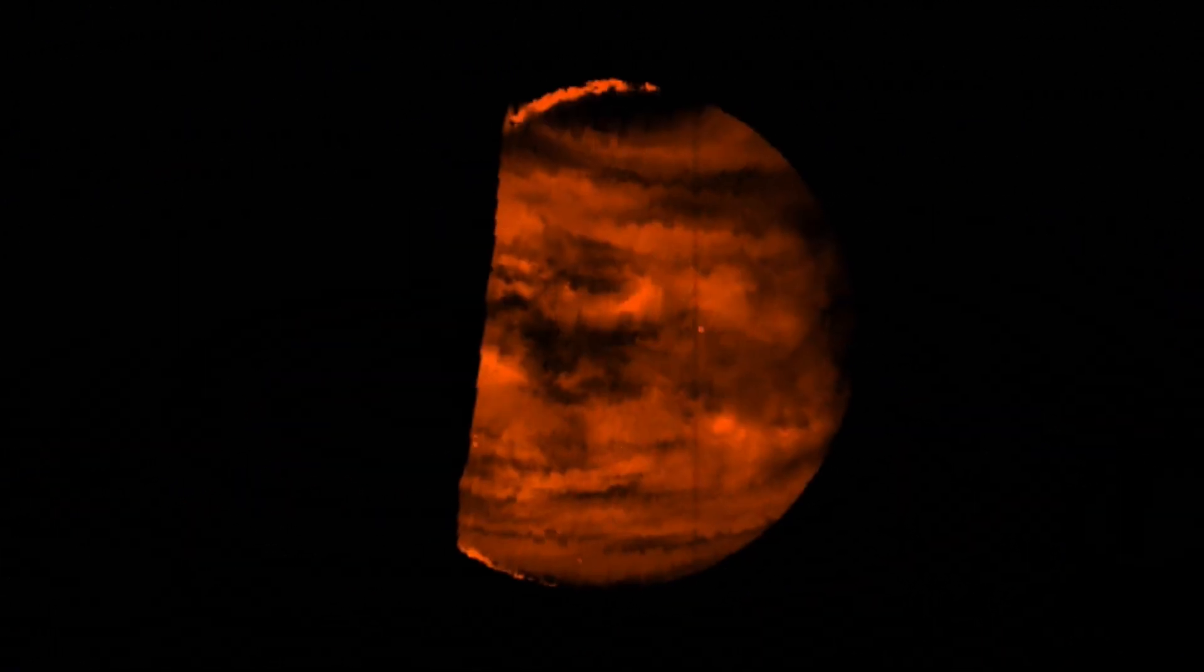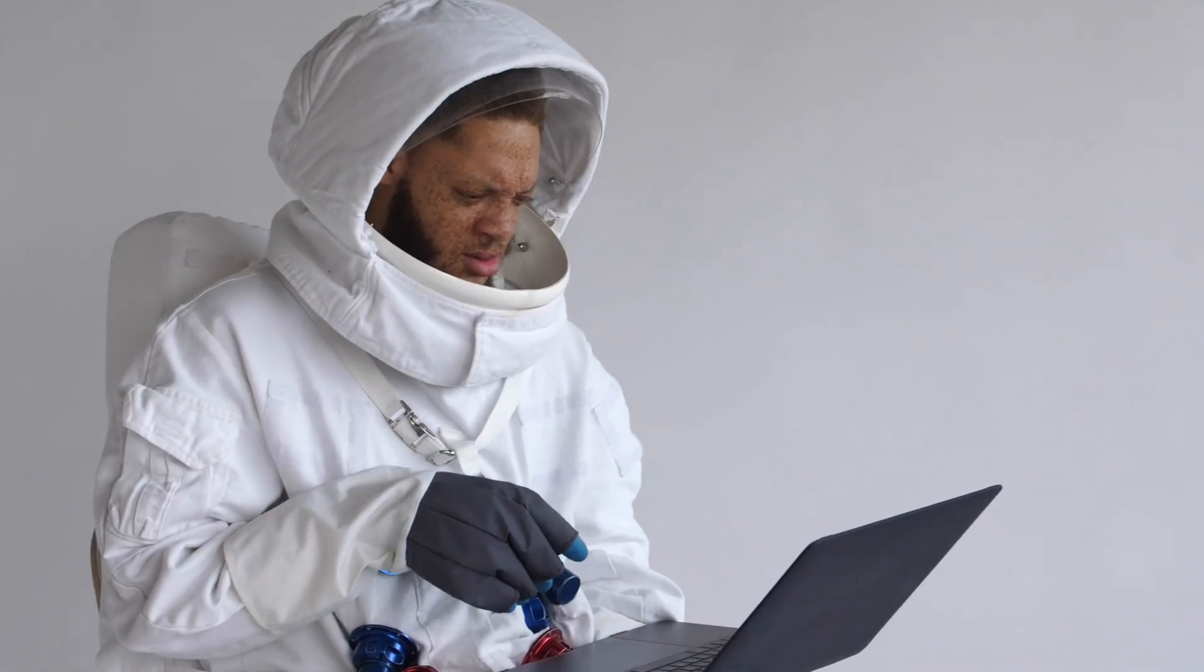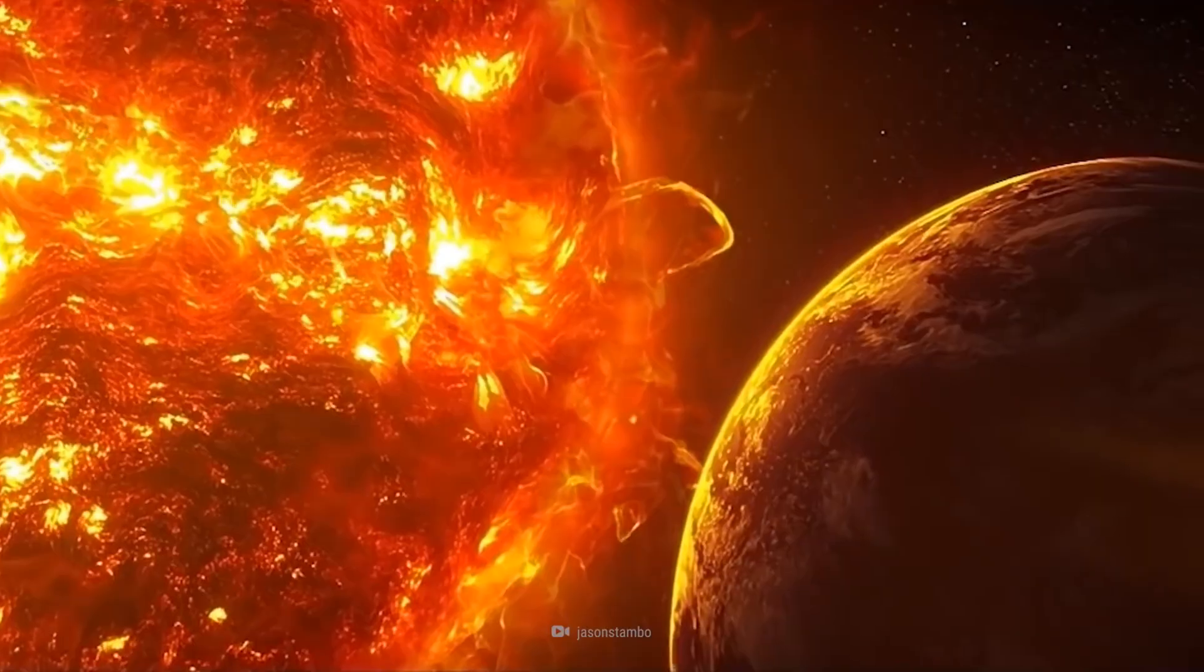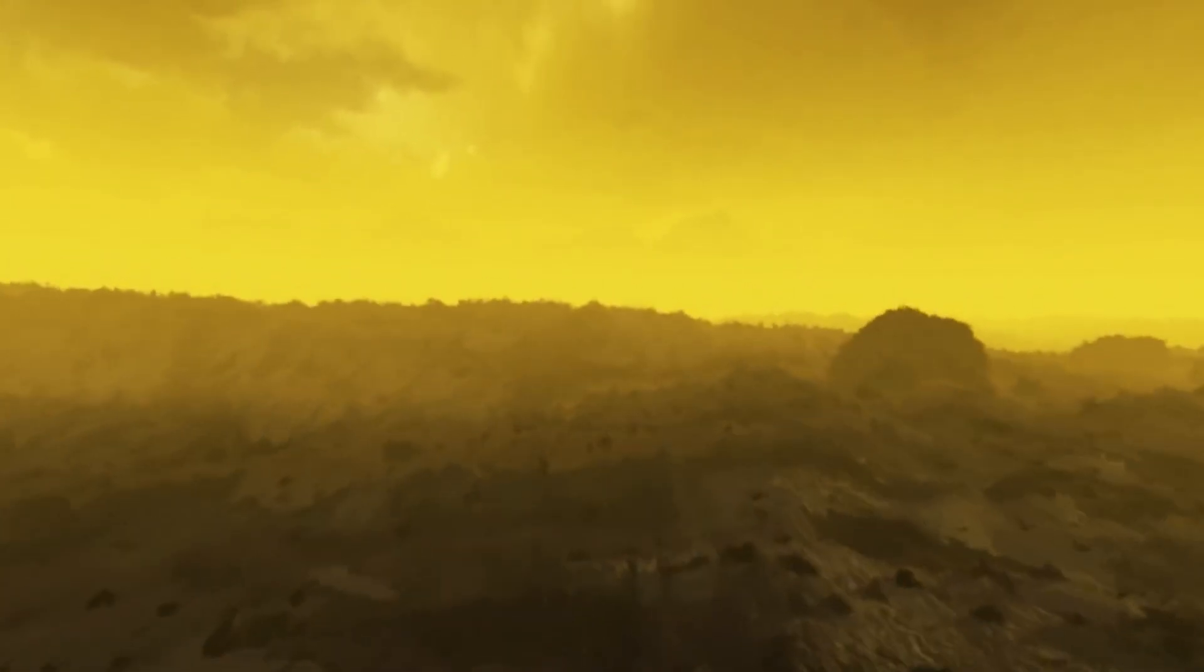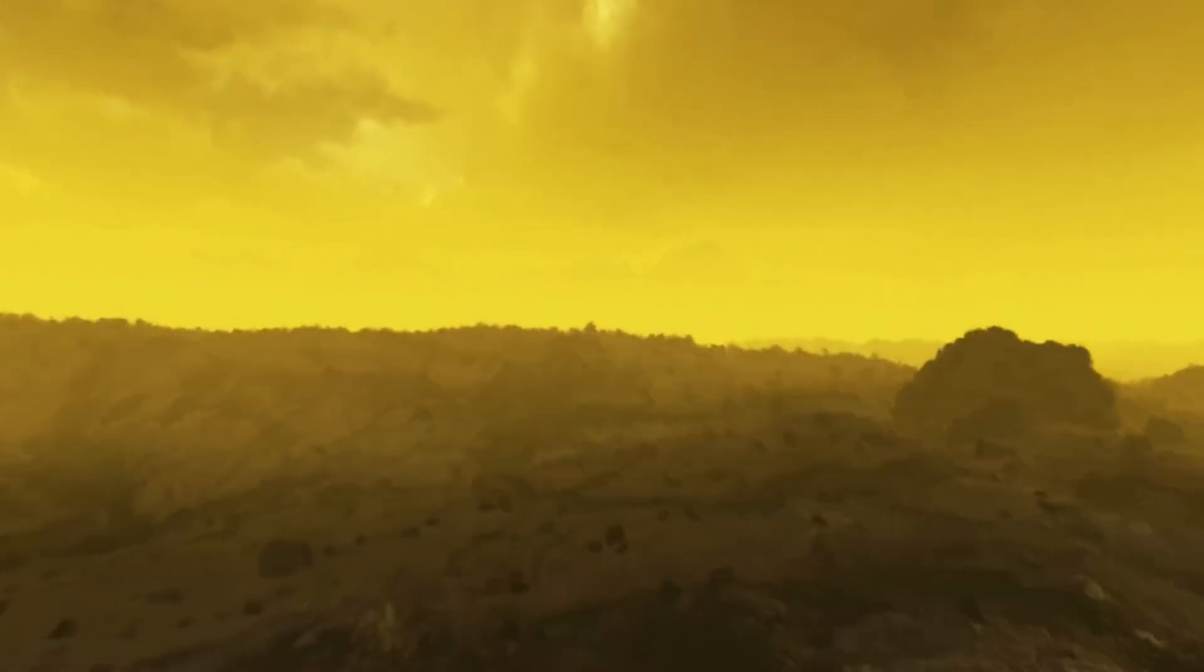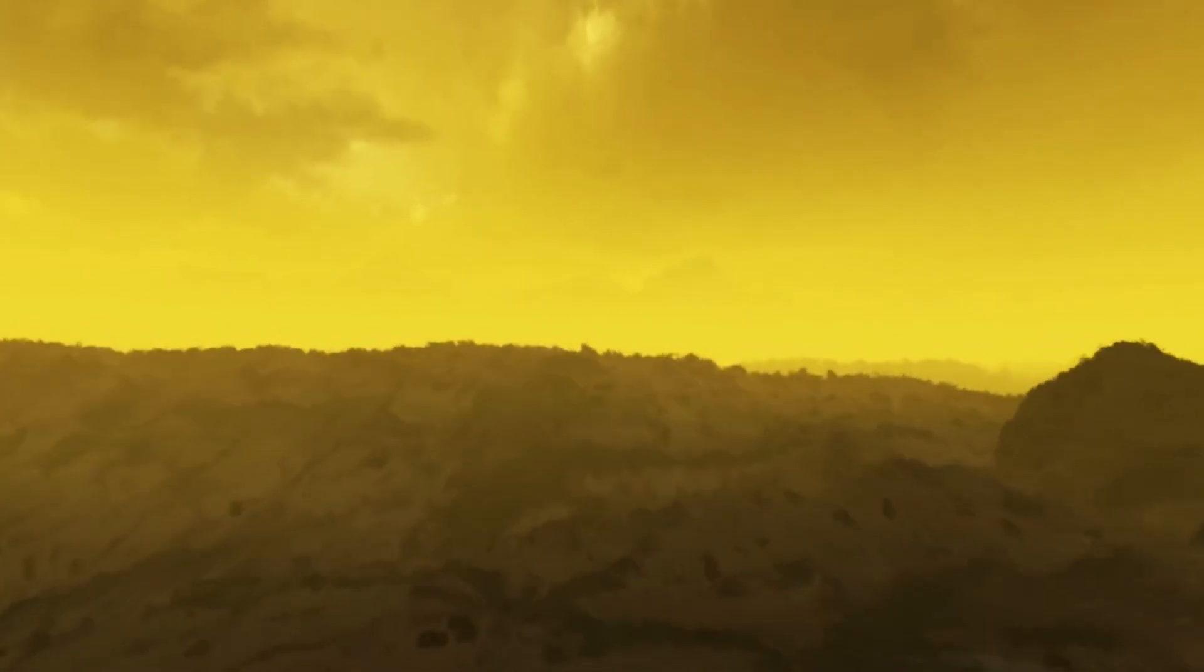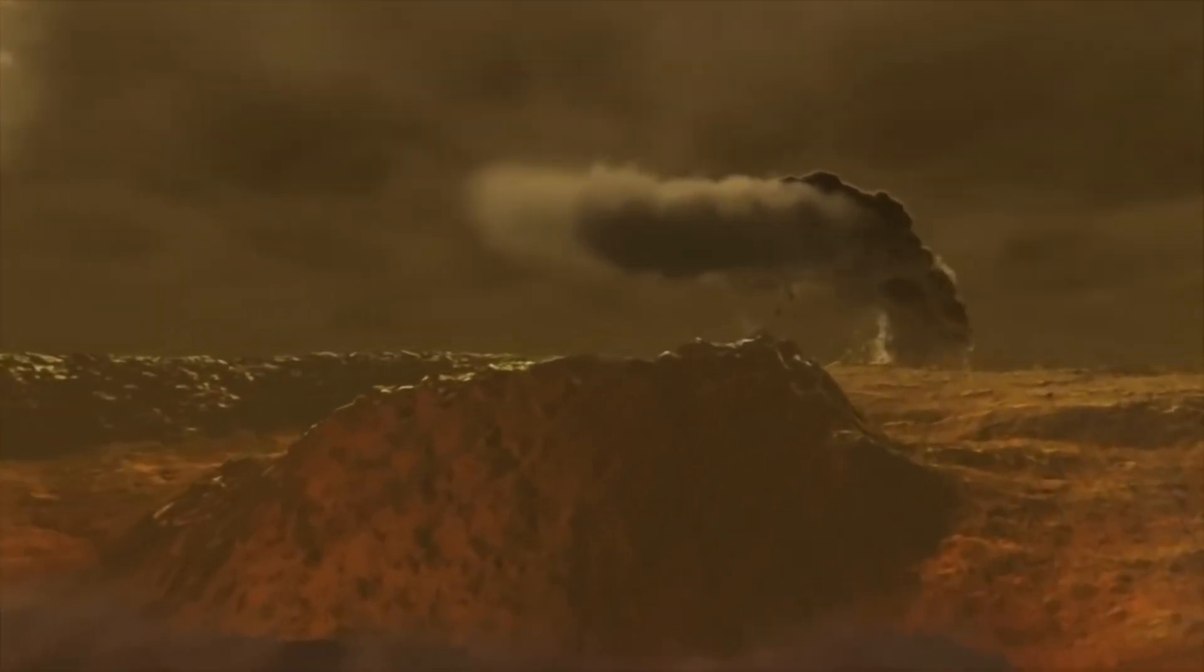That's because Venus is literally the worst place to live. Venus is the hottest planet in the solar system with 900 degrees Fahrenheit temperatures. Even the clouds are made of highly corrosive sulfuric acid, and the surface pressure is about 92 times the pressure you'd feel at sea level on Earth.